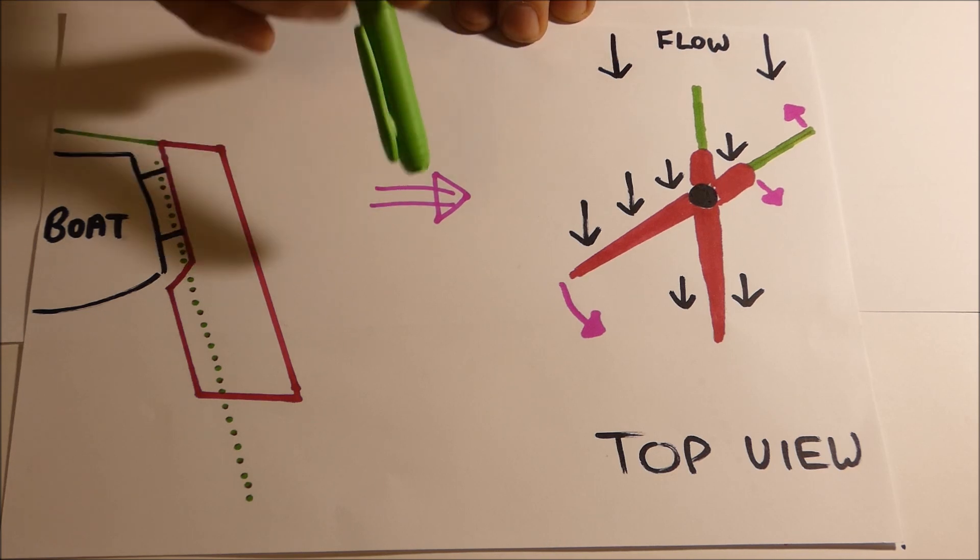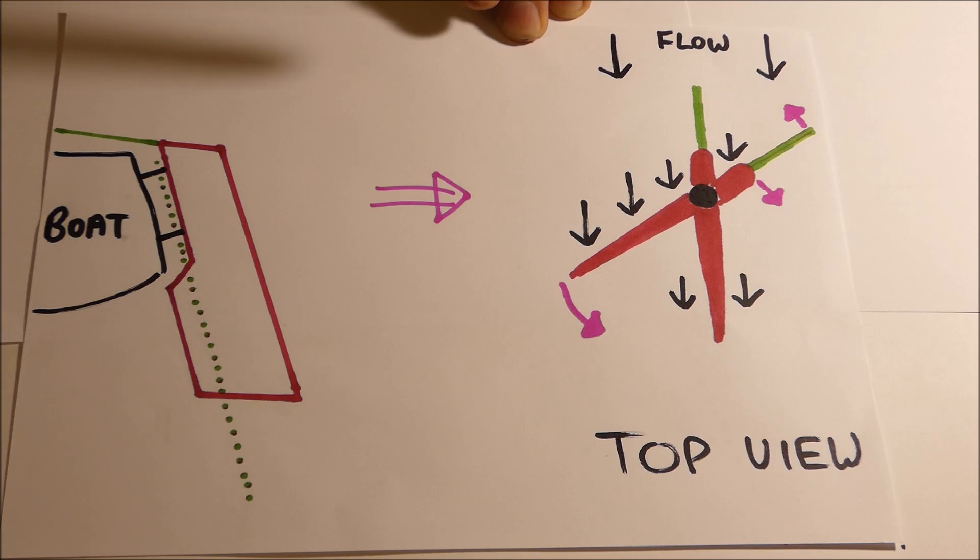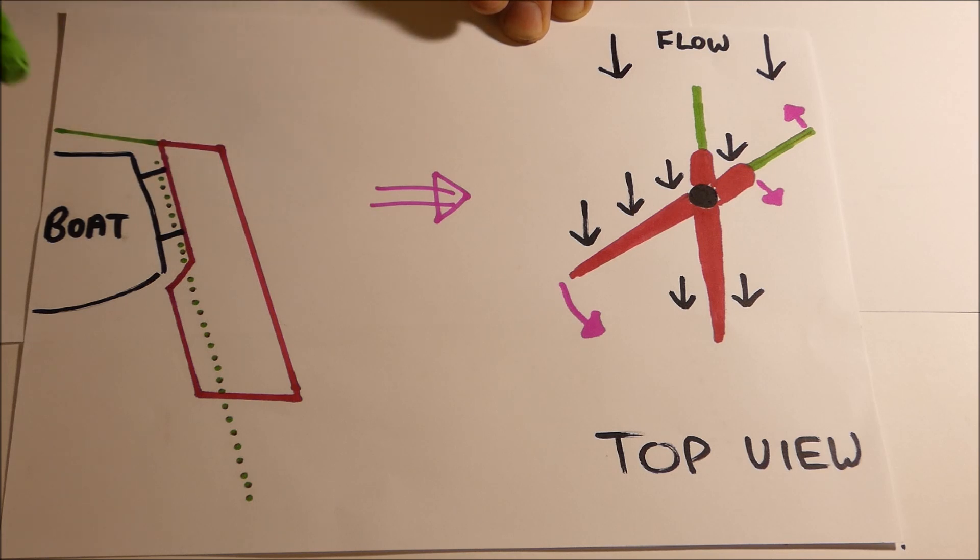So if we go over to the top view over here, again the flow is going down the page like that. And in the straight ahead position, the rudder has flow on equal sides, there is no pressure on the tiller, so you have no pressure.